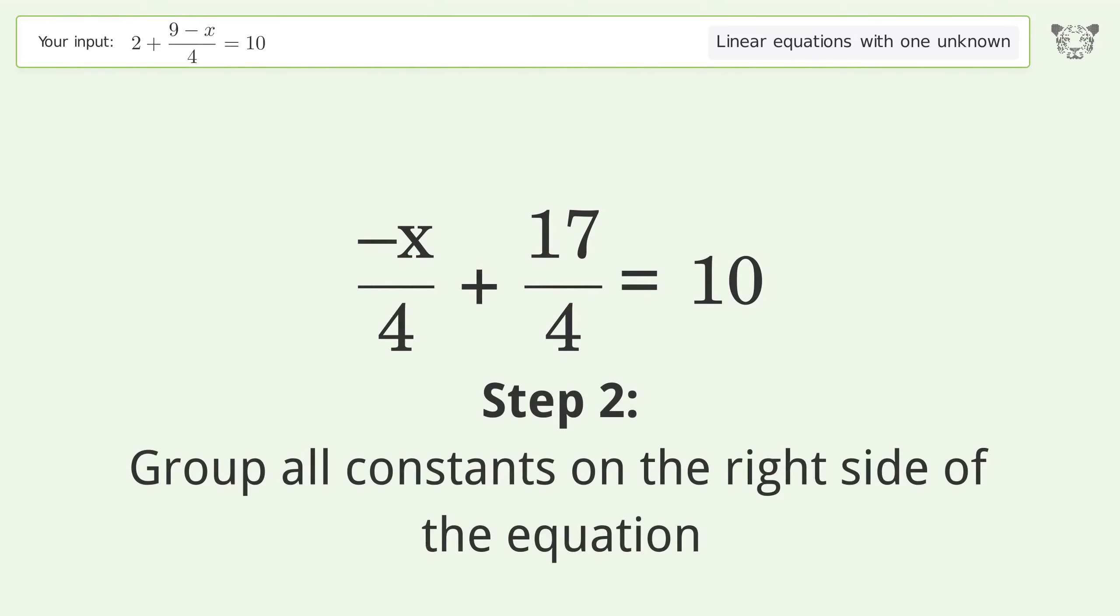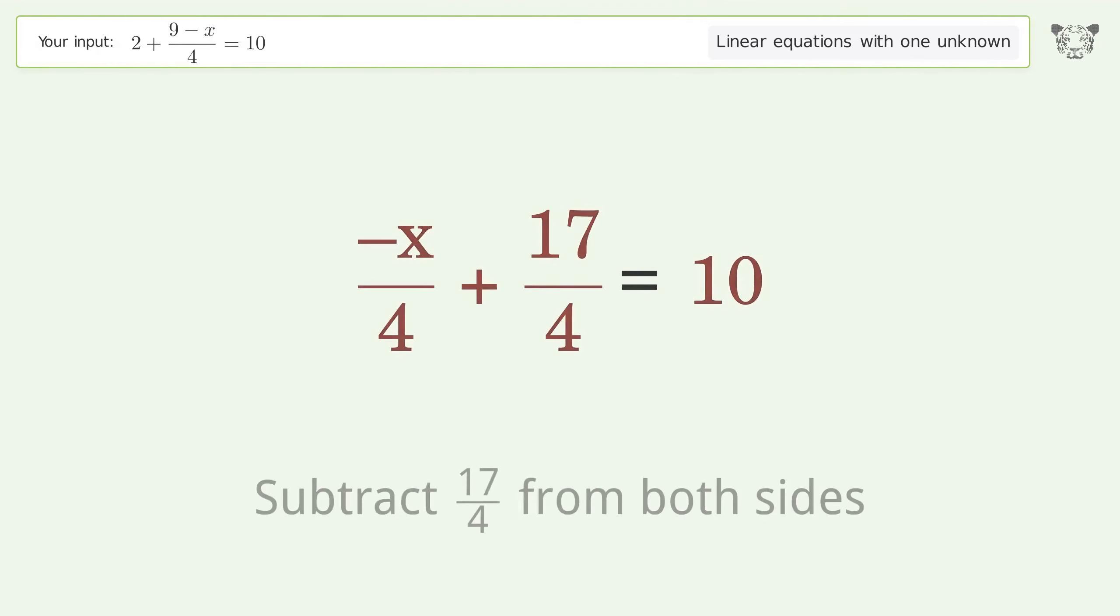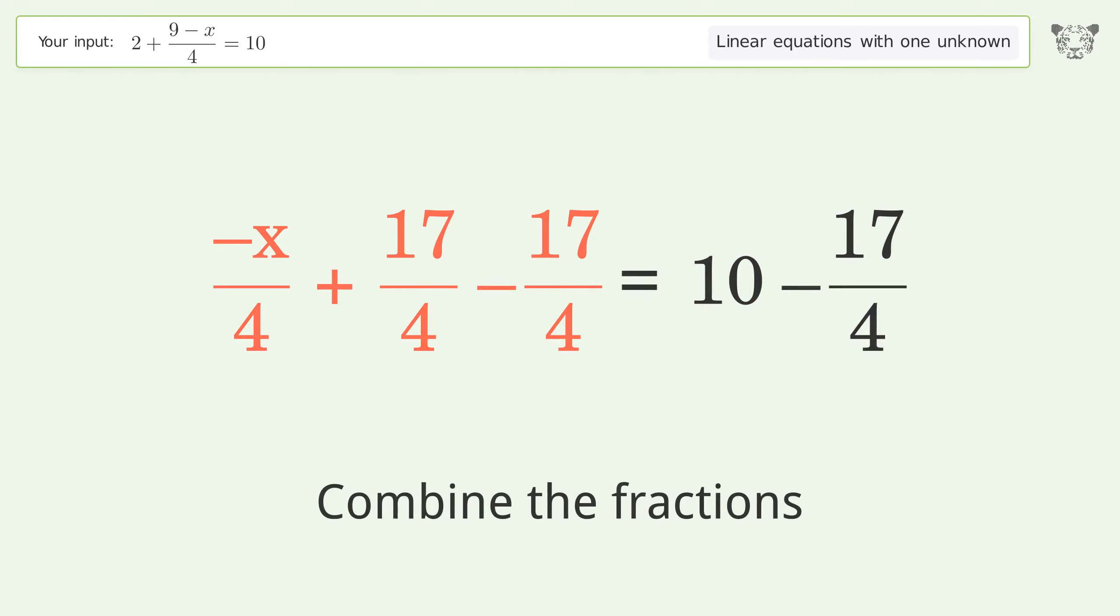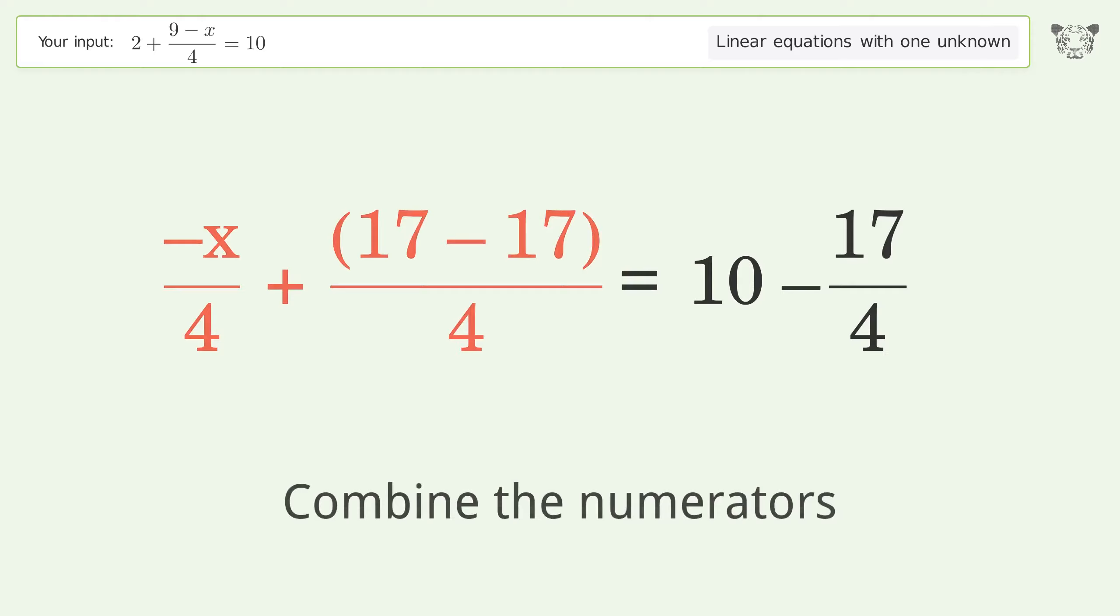Group all constants on the right side of the equation. Subtract 17 over 4 from both sides. Combine the fractions, then combine the numerators.